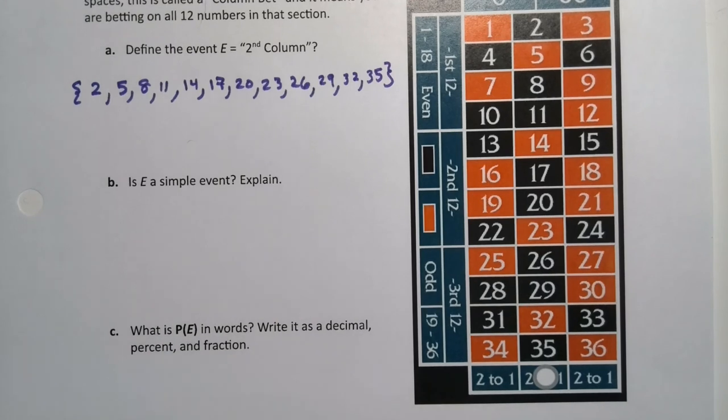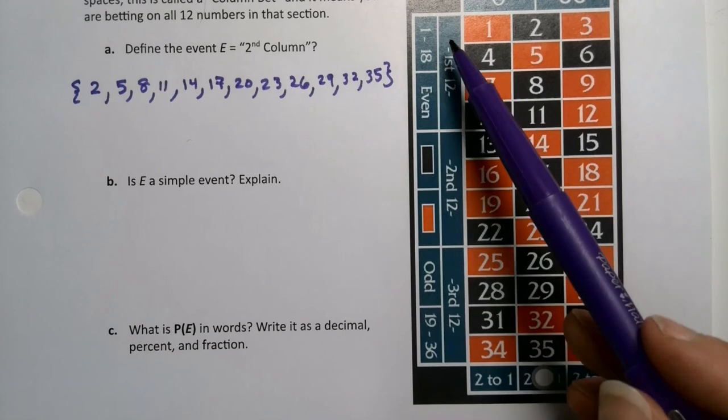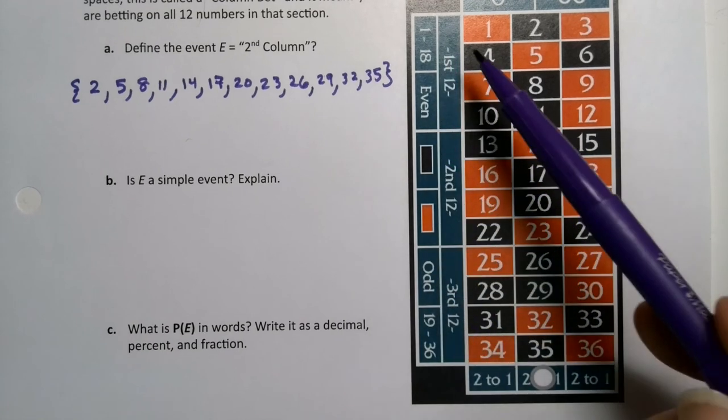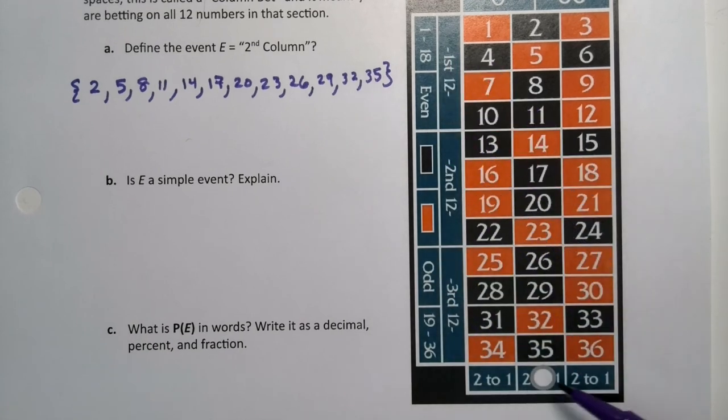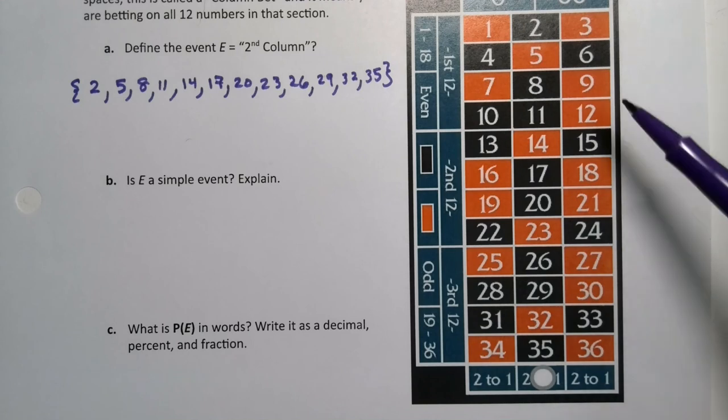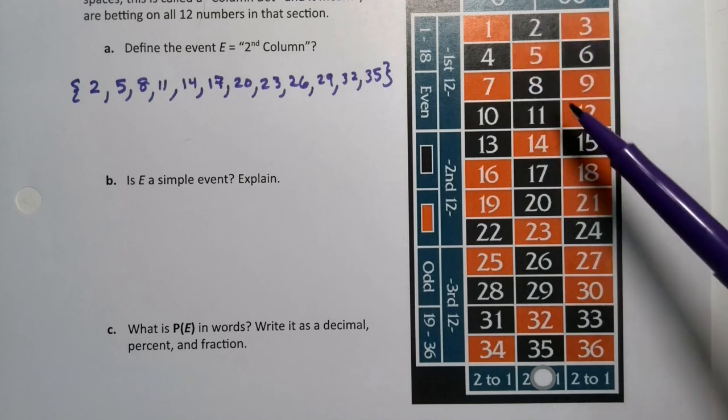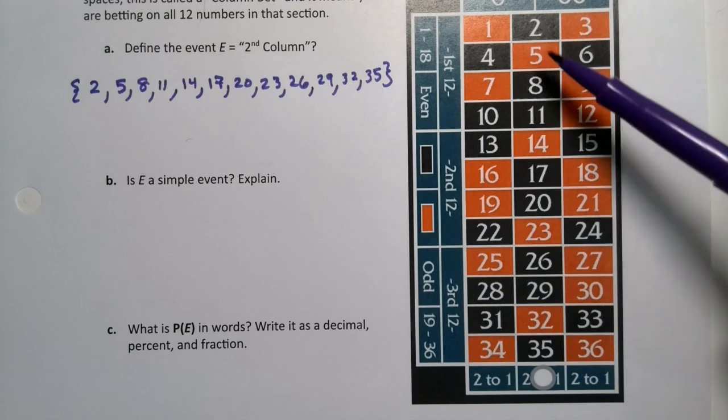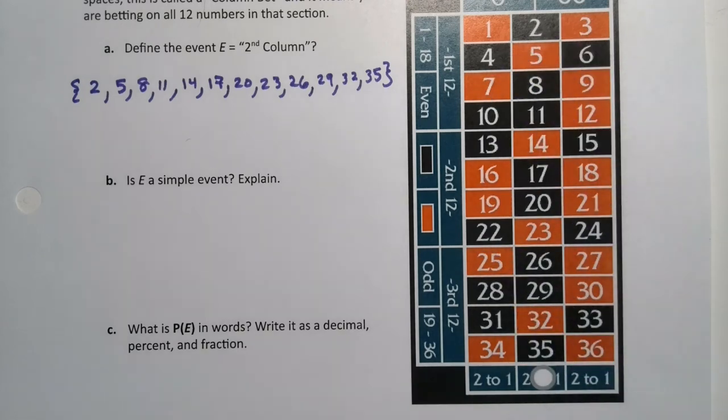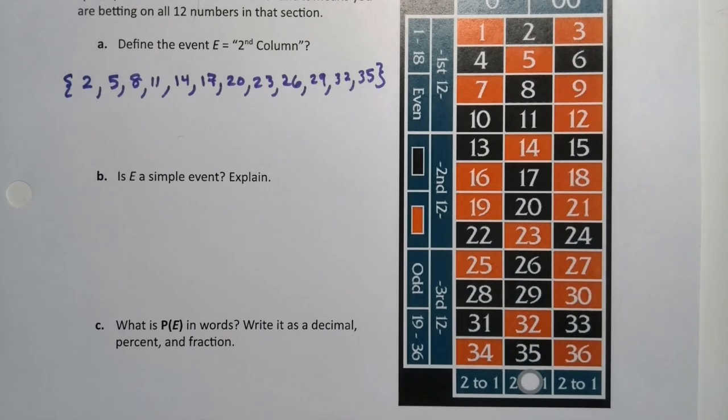That's actually called an outside bet, in case you're interested. Things that are on the outside here and here, as well as the column bets, are called outside bets. Betting on the 0, the 00, or any of the numbers, putting your chips in here, are inside bets, in case you're interested.